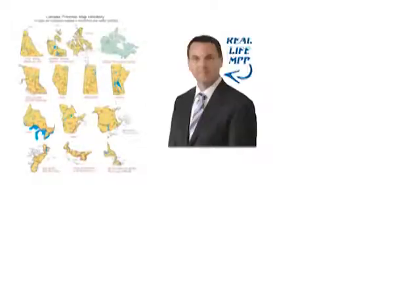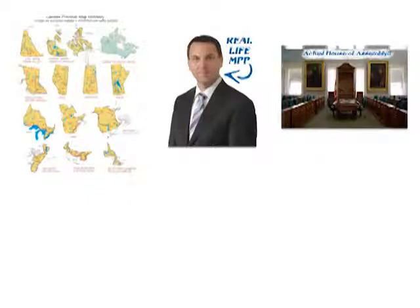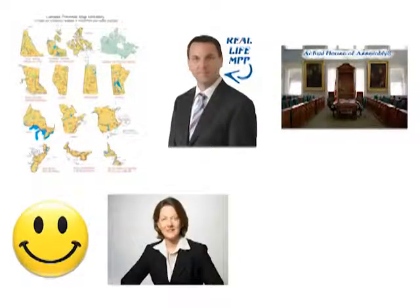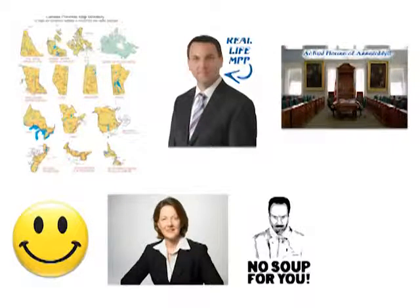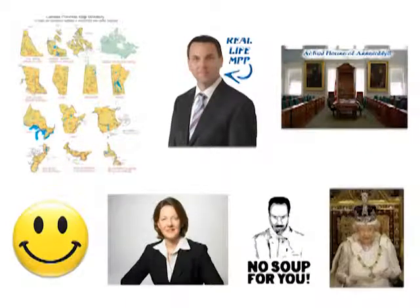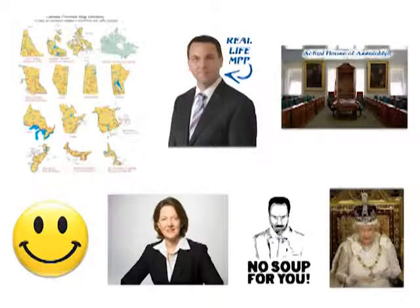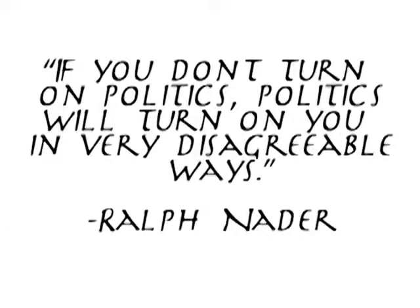To sum up: provinces elect a number of MPPs to the General Assembly; the party with the most MPPs is given the mandate to govern and their leader becomes Premier; the provinces are autonomous so long as they don't want federal money or try to touch legislation not on their list; and the Queen still has her royal scepter up in our business provincially. Keep yourself involved — the future is counting on you. Have a great day.